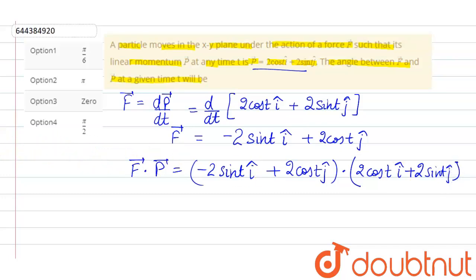On further solving, what we do in dot product is simply multiply the coefficients of i cap. So it will become minus 4 sin t cos t.